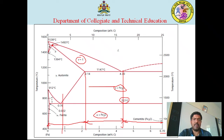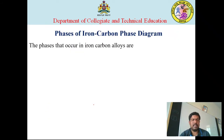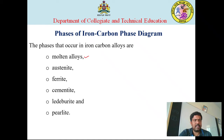This is the iron-carbon diagram, and for this diagram you can expect a maximum of 10 marks, so you should mark all the salient points. In iron-carbon alloys, various phases form as iron or steel cools from the molten state to room temperature. These include: molten alloy in liquid state, austenite, ferrite, cementite, ledeburite, and pearlite. Let us discuss each one in the next slides.